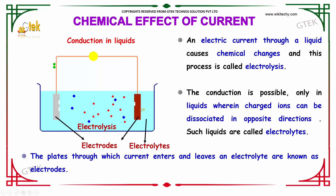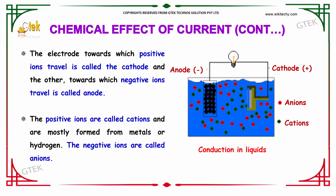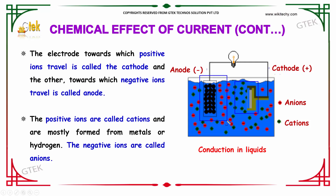The place through which current enters and leaves an electrolyte is referred to as an electrode. The electrode toward which positive ions travel is considered the cathode, and the electrode toward which negative ions travel is your anode. The positive ions are called cations and the negative ions are called anions.